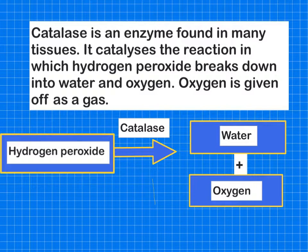So what we're going to do is we're going to look at the hydrogen peroxide which is the substrate in this case. We're going to look at the effect of different concentrations on the rate of this reaction.